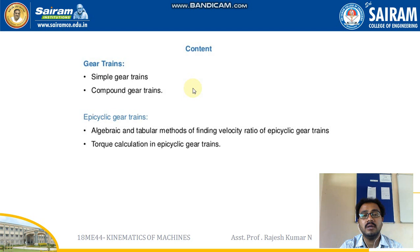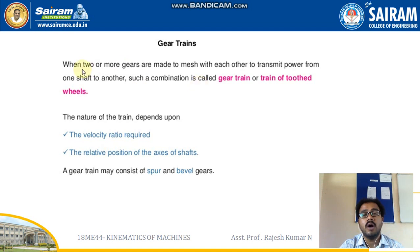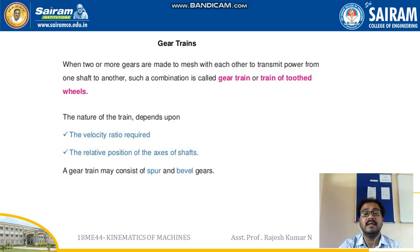Before moving to the numericals, we will have a brief introduction about gear trains. When two or more gears are made to mesh with each other to transmit power from one shaft to another, such a combination is called a gear train or a train of gears. The nature of the train depends on two points: the velocity ratio required, and the relative position of the axis of the shafts.